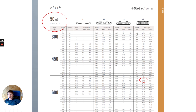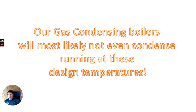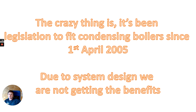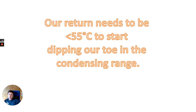Looking at Screwfix, we've noted the watt output for a 600×600 K2 double convector panel radiator: 1,056 watts — and if you note in the specification, it's listed at delta T 50. On the Stelrad website, also at DT50, you can see they've stated the flow, return, and room temperature — a 10-degree difference and 20°C room temperature — with about a 10-watt difference between the two catalogues for a like-for-like K2. Our gas condensing boilers will most likely not even condense running at these design temperatures at minus 3 outside. The crazy thing is it's been legislation to fit condensing boilers since 1st April 2005, yet due to system design we're not getting the benefits. Our return needs to be less than 55°C to start dipping into the condensing range.